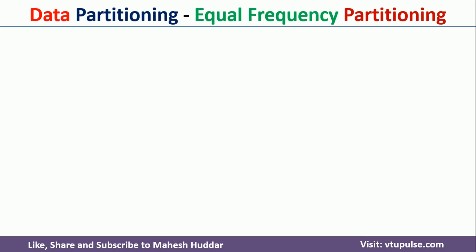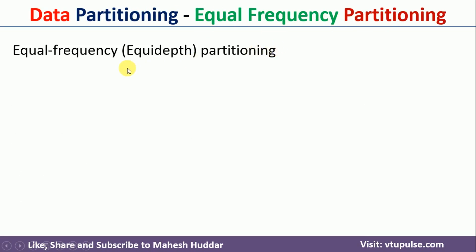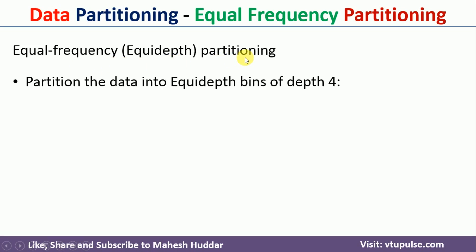The first method is equal frequency partitioning, also called equidepth partitioning. In equal frequency partitioning we need to know what is the depth of that particular partition. Let us assume that the depth is equal to 4, meaning we need to put 4 data points into one partition.